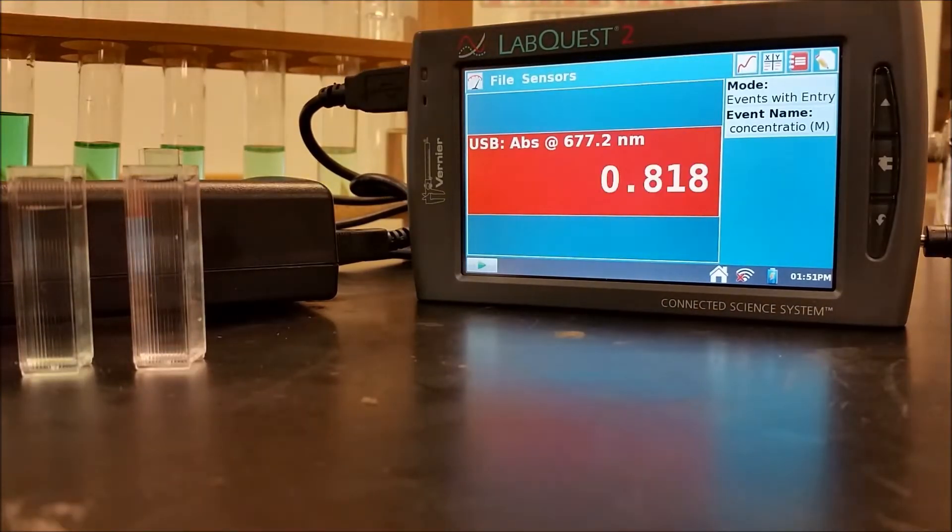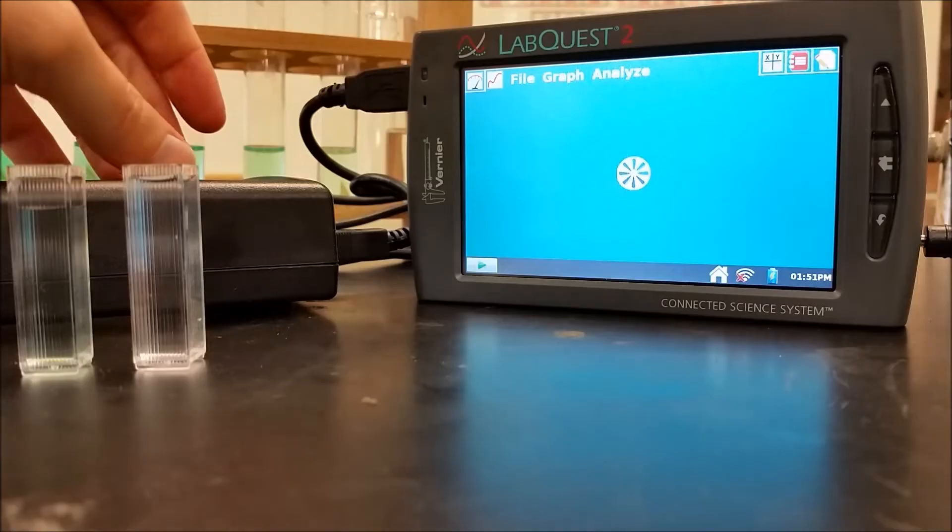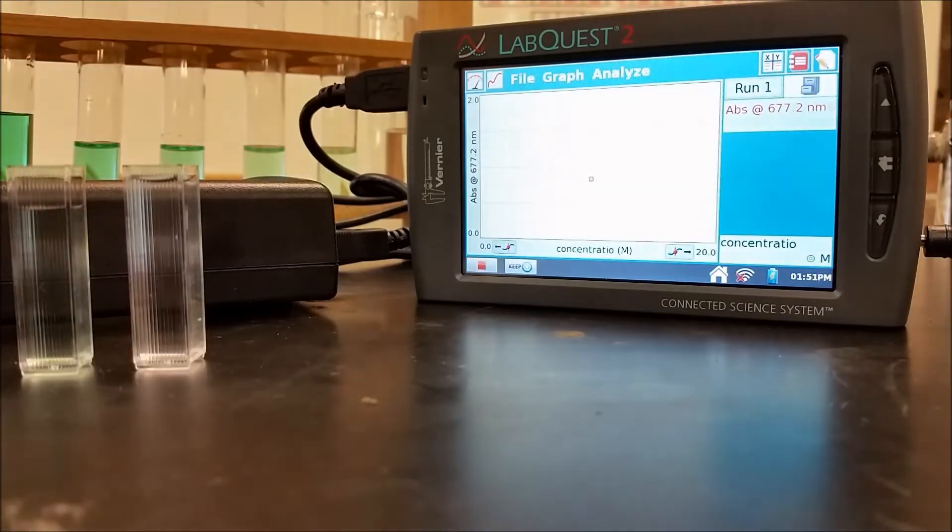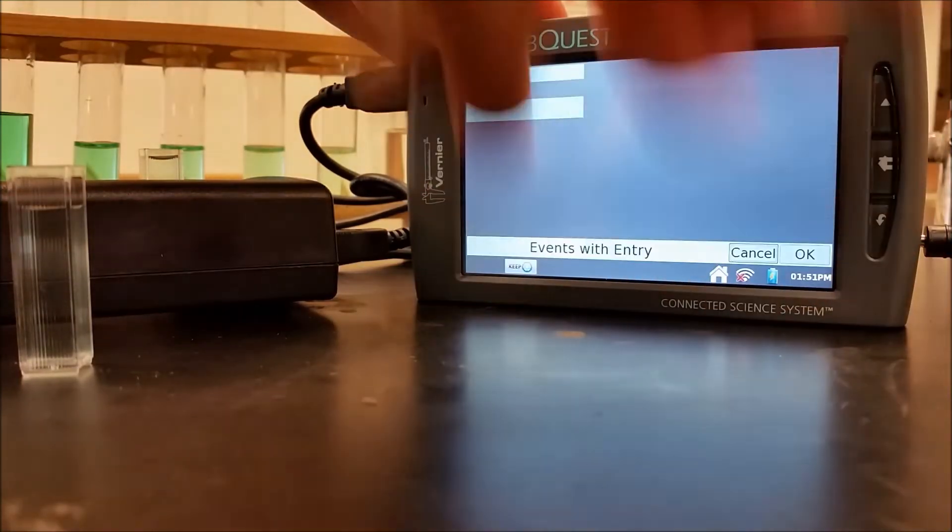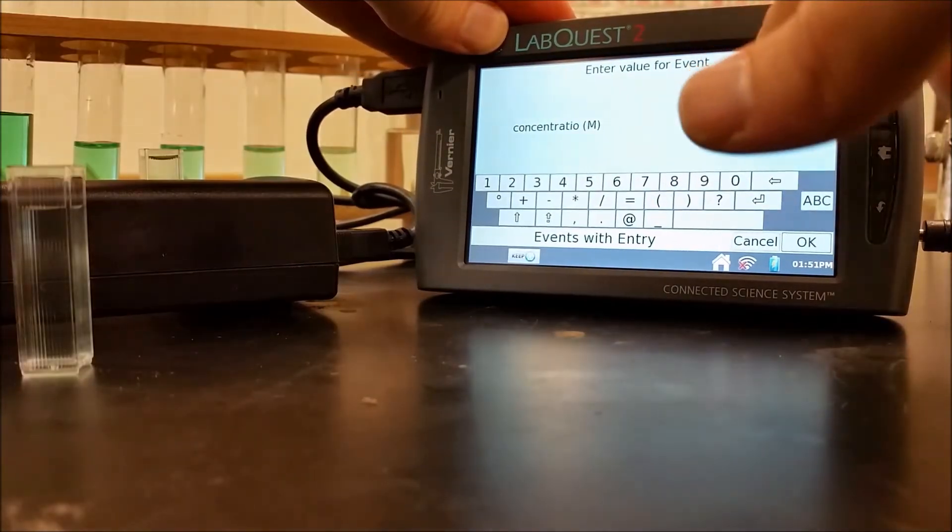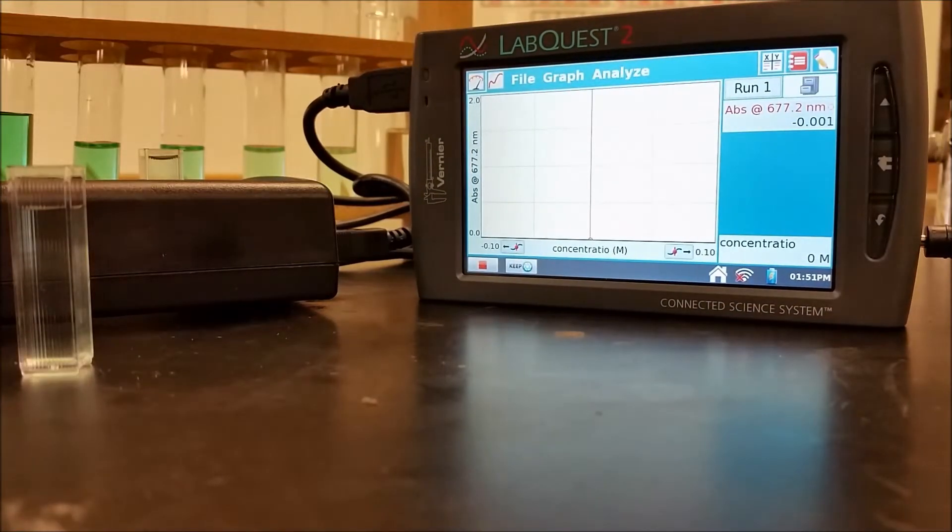So now I have my wavelength set, and this is now telling me what the absorbance is. So I'm going to hit Play and start collecting my data. So now each time I put one of these solutions in, it's going to tell me what the absorbance is. So I'm going to start with my blank. My absorbance should be about zero, which it is. So I'm going to hit Keep down here at the bottom. And then I'm going to type in what the concentration is. In this case, it was zero. And that just kept my point.